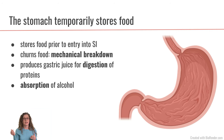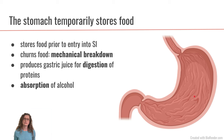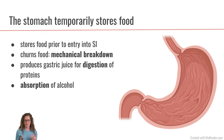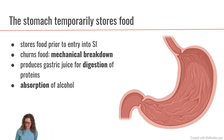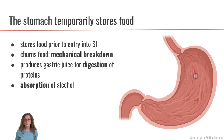We have ingested our food, it has traveled down our esophagus through peristalsis, and now we have arrived in the stomach. One of the main roles of the stomach is to temporarily store food before entry into the small intestine, because we really want to make sure we're not overloading the small intestine with lots of food all at once. The stomach is also going to be involved in mechanical breakdown of our food through churning.